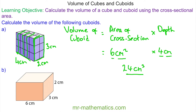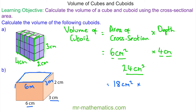For question B, I am going to choose the top face as the cross-section. The area of this top face is six centimetres — this length — multiplied by the width, which is three centimetres. So the area of the top face is six times three, which is 18 centimetres squared, multiplied by the depth of two centimetres. So the volume is 18 times two, which is 36 centimetres cubed.